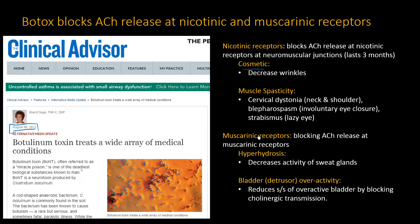Acetylcholine also works at muscarinic receptors. For patients with hyperhidrosis — excessive sweating at the armpits or palms — a local injection of Botox lasting several months will dramatically decrease activity at those sweat glands. The most recent FDA approval is the use of Botox for bladder overactivity. Since acetylcholine binds to the bladder and causes contraction, reducing that cholinergic transmission alleviates those irritating symptoms.